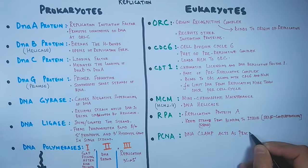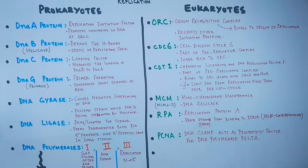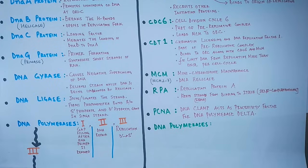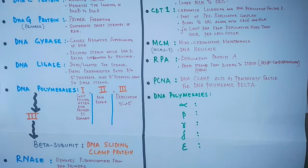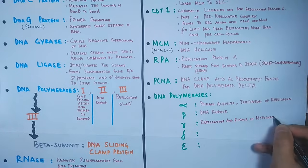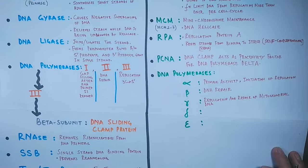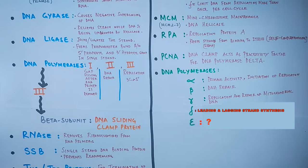Then we have PCNA protein — a DNA clamp molecule which acts as a processivity factor so that DNA polymerase, once bound, does not leave the strands. In eukaryotes there are five types of DNA polymerases: alpha, beta, gamma, delta, and epsilon. Polymerase alpha shows primase activity and helps in initiation. Beta polymerase has a role in DNA repair. Gamma polymerase has a role in replication and repair of mitochondrial DNA. Delta polymerase is the chief polymerase in eukaryotes, driving the DNA replication process and synthesizing both the leading and lagging strands.